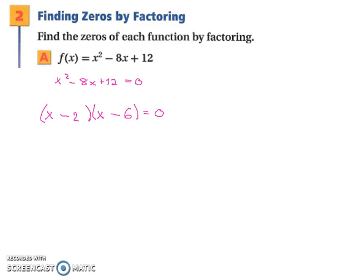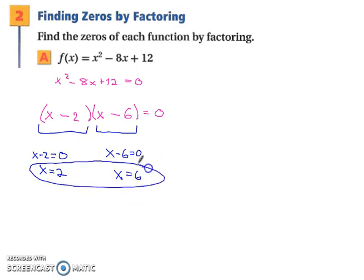Now comes the part where we find our zeros. So we're going to take each piece and set it equal to 0. So x minus 2 equals 0, and x minus 6 equals 0. And then simply solve for x. So x is equal to 6, and x is equal to 2. We now have our two zeros.